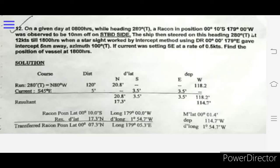Question number 12: On a given day at 0800 hours while heading 280 degrees true, a racon in position 00°10'S 179°00'W was observed to be 10 nautical miles off on the starboard side.